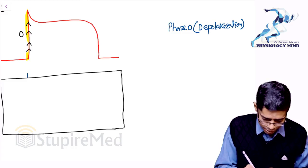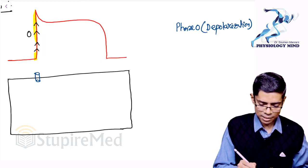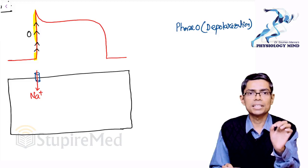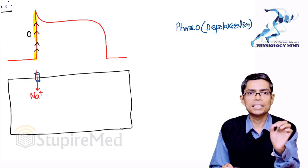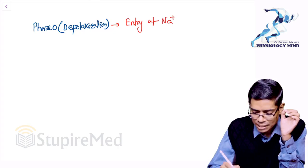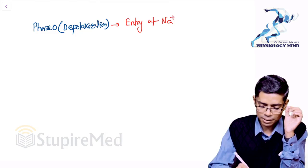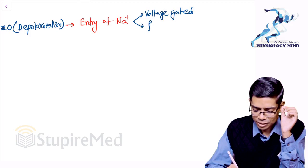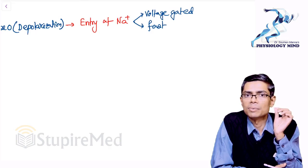During Phase 0, a channel on the myocardium membrane opens and allows sodium to enter the cell. This channel is the voltage-gated sodium channel — and importantly, it is a fast voltage-gated sodium channel. It opens within just 0.1 milliseconds.